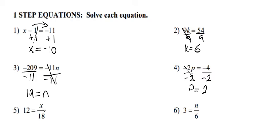For number 5, in order to get x by itself, you ask yourself, what's the opposite of what's going on here? We have x divided by 18. So the opposite of divided by 18 would be times 18. So if we multiply both sides by 18, 12 times 18 is 216. And on the right side, the two 18s cancel, and we're left with just x.